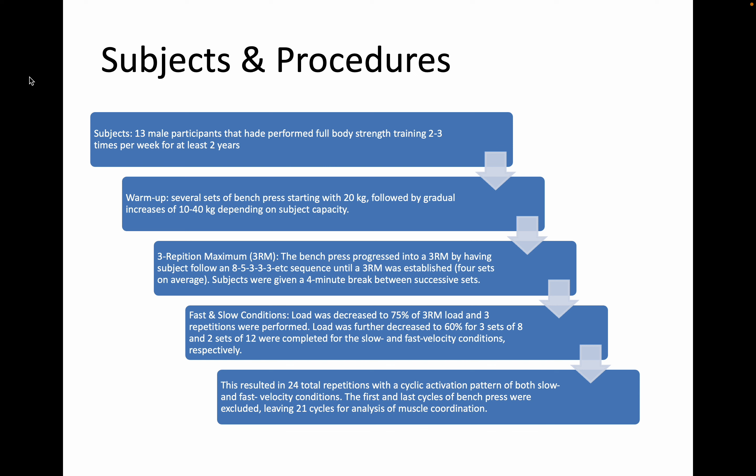This resulted in 24 total reps, but the authors utilized 21 cycles — defined as the time from the top of the bench press position to the next top of the bench press position — leaving 21 cycles to analyze muscle coordination.